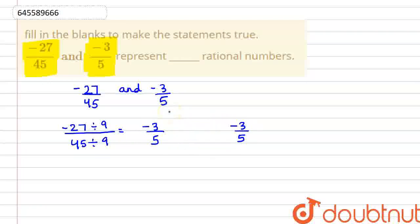Okay, so that means these two are equal. So we can say that our answer is minus 27 by 45 and minus 3 by 5 represent equal rational numbers. Okay, so our answer is equal. So this is our final answer. Thank you.